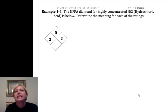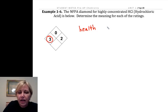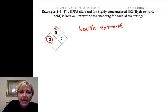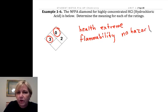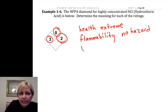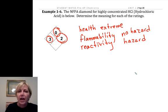If we look at this example, we have a three in the left-hand position. That left-hand position is health, and three means it's an extreme health hazard. We have a zero on the top — that's flammability — and there is no flammability hazard because it's a zero. The two is in the reactivity position. You'll have to memorize these positions and be able to read the diamond for your quizzes.